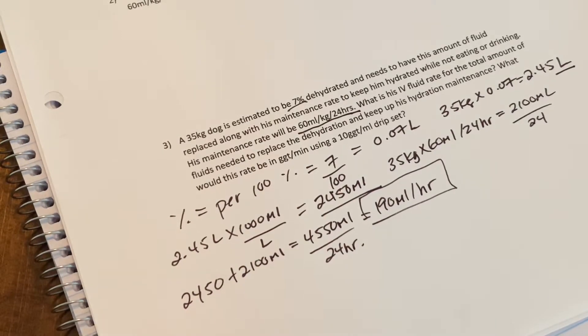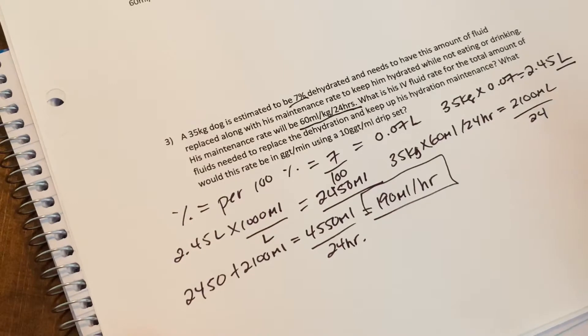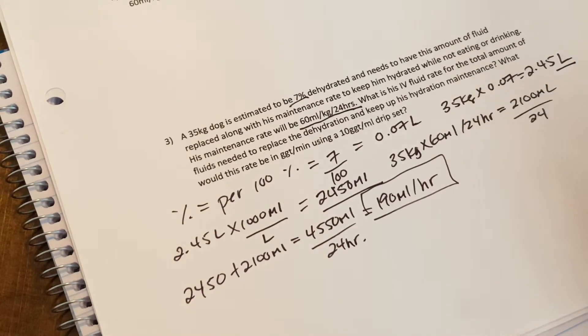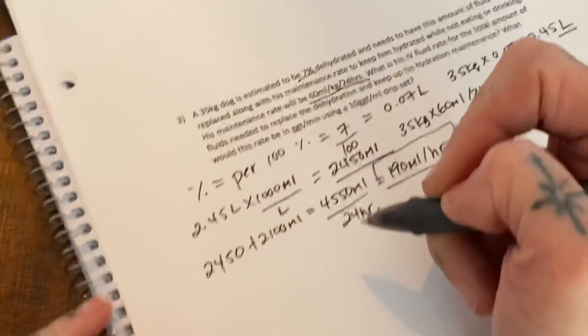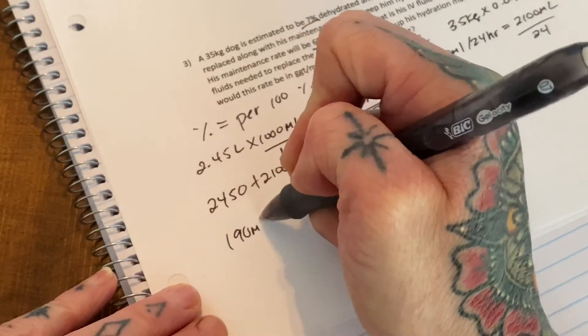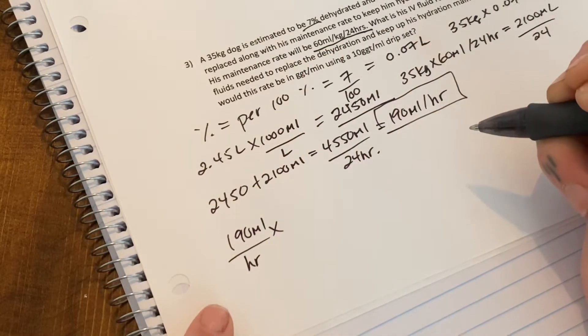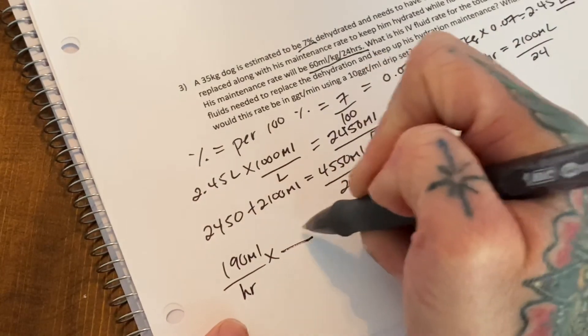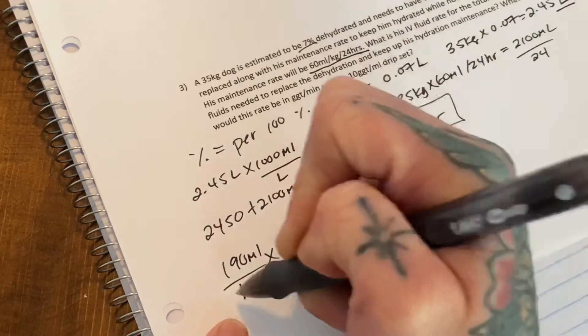So what would this rate be in drips per second or minute? We're gonna do both. So 190 mils per hour, and we'll do it in the long way, the dimensional analysis, because I actually do think this makes more sense this way. So 190 mils per hour, and if you just work through it logically it will make more sense. Hour is down here, we need hour to be up here so it's always going to be opposite from each other. This is one hour, that's one hour.